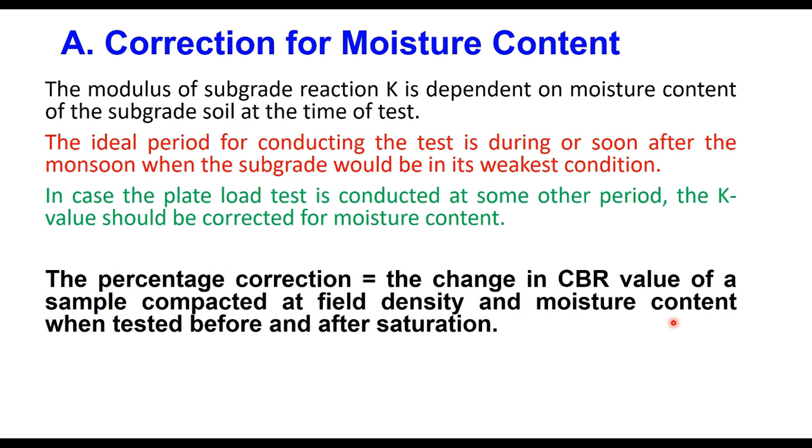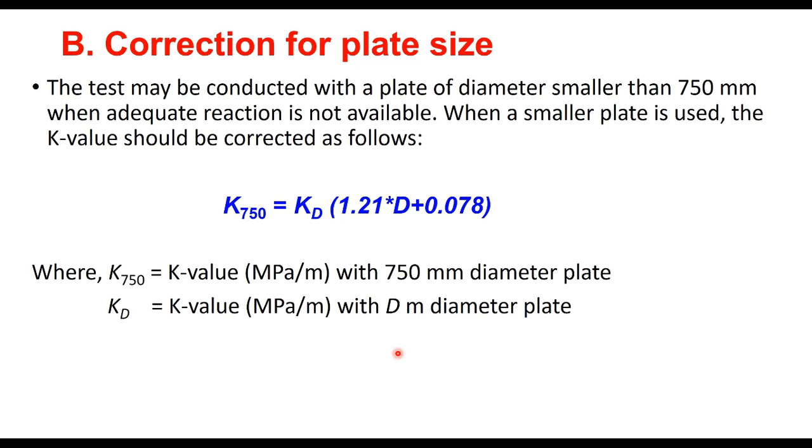This correction can be approximately taken equal to the change in CBR value of a sample compacted at field density and moisture content when tested before and after saturation. The second correction is for plate size. The standard procedure is to conduct the test using a plate of 750 millimeter diameter, but when adequate reaction is not available in the field, then a smaller plate can also be used.